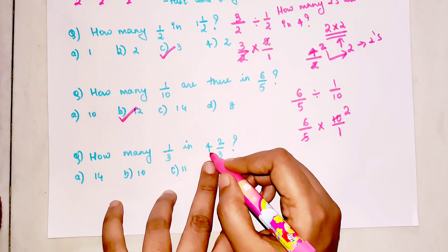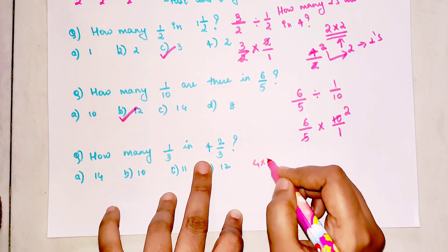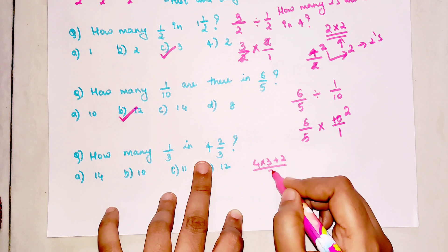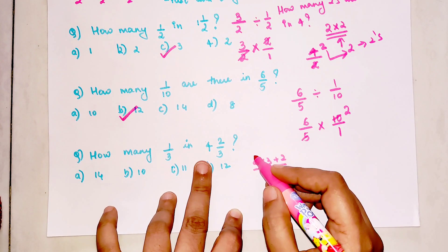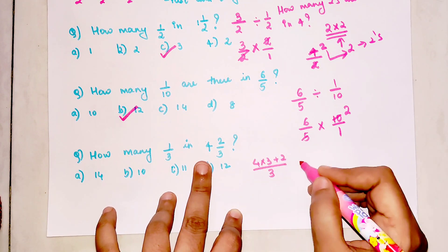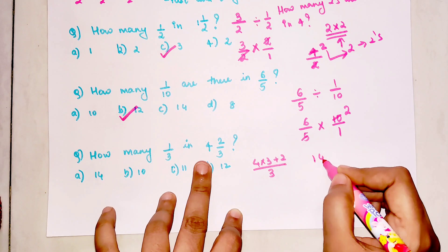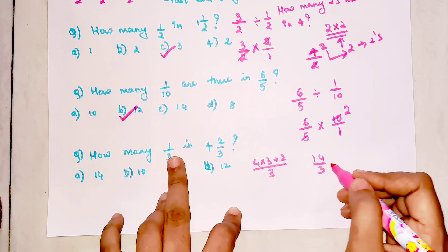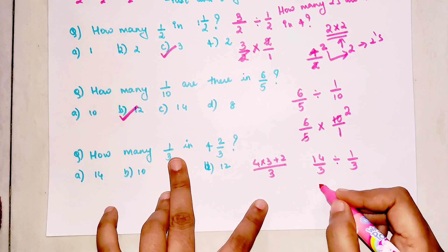Very quickly let's do this. 4 times 3 is 12, plus 2 is 14/3. That is your improper form, which is going to get you 14/3 divided by 1/3. So basically 14/3 times 3. Cancel, cancel—the final answer is 14.